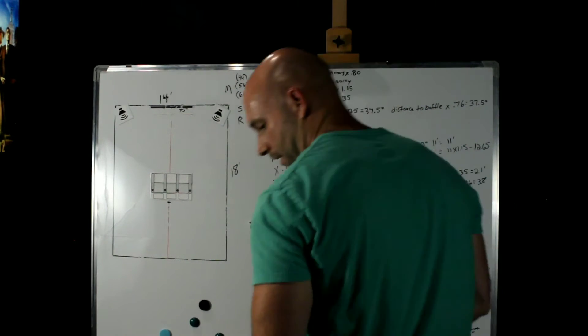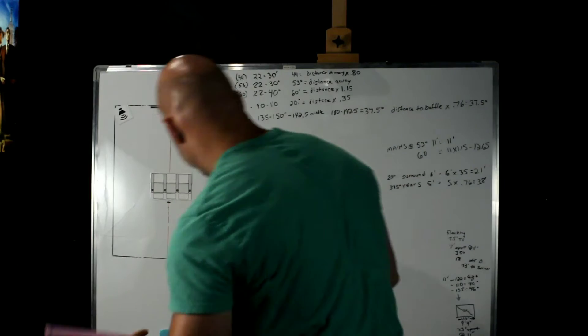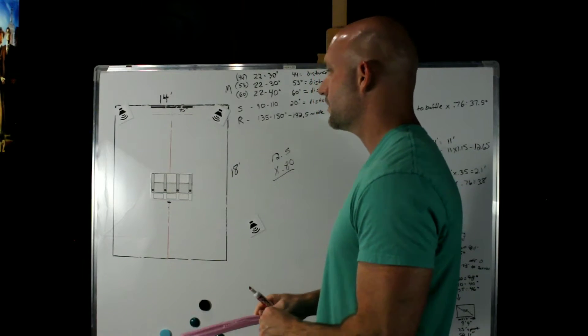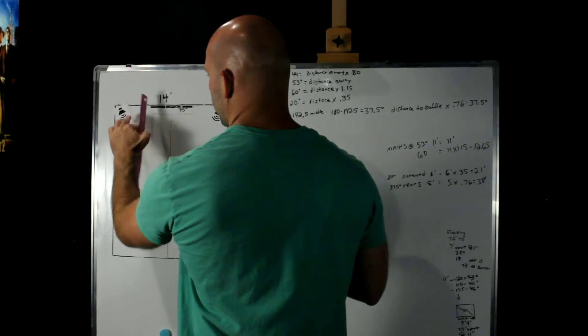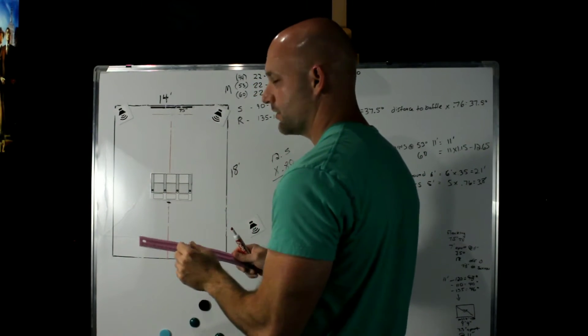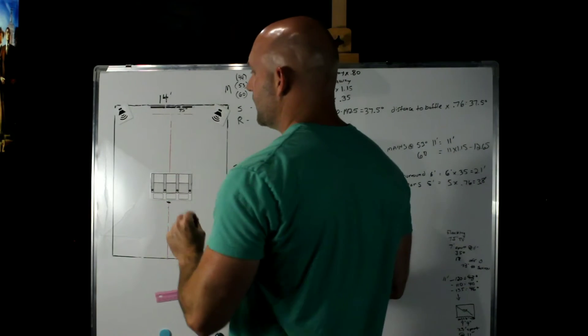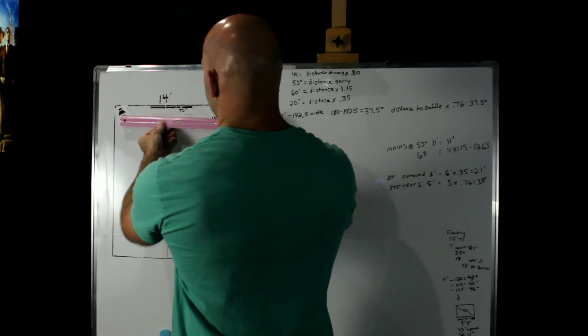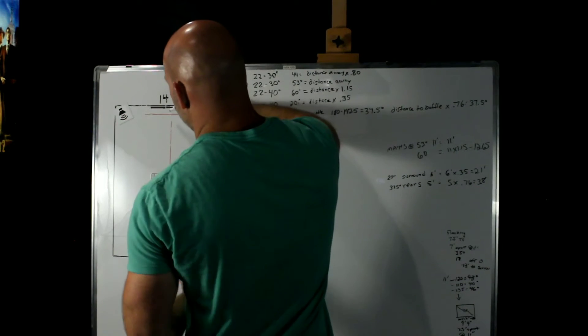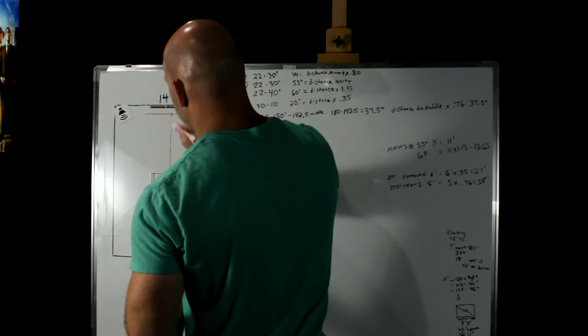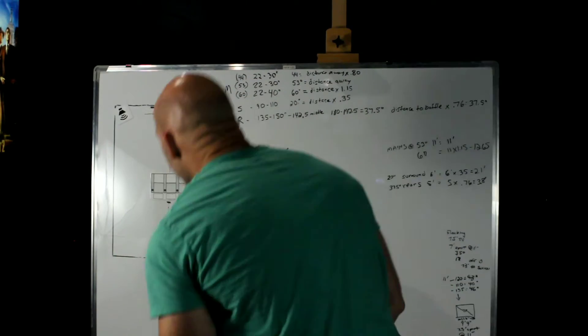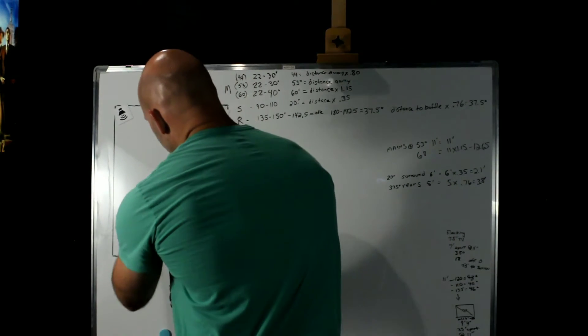So the first thing you need to do in your room is get a piece of string or a piece of yarn. Go from the front of one speaker to the front of the other. Now you're going to go from the center, because you're going to have toe in probably, or your speaker should be toed in. You're going to go from the center of the speaker to the center of the other speaker and put a line in there. You're looking for this point right here in the center of the room where it intersects. That's actually going to be the distance we're going to use.